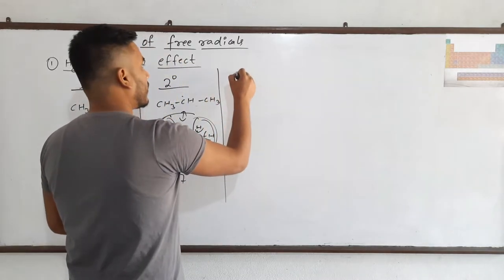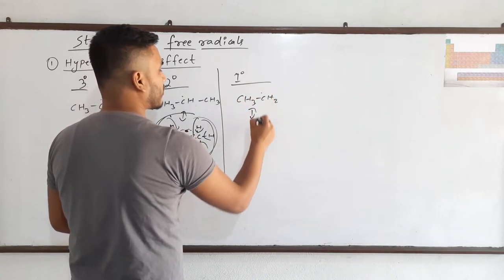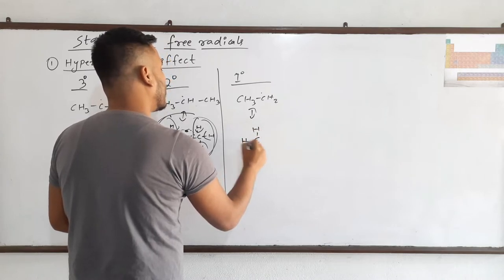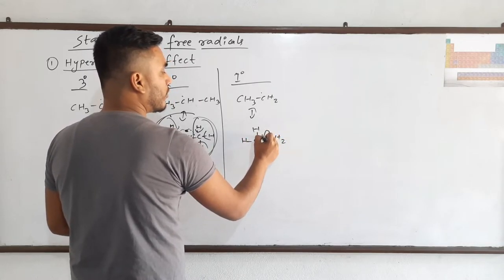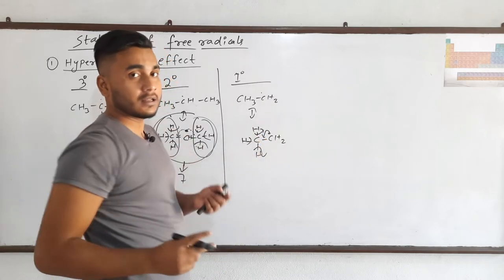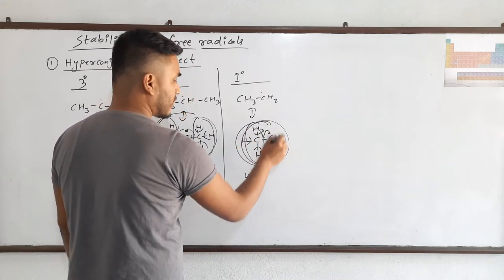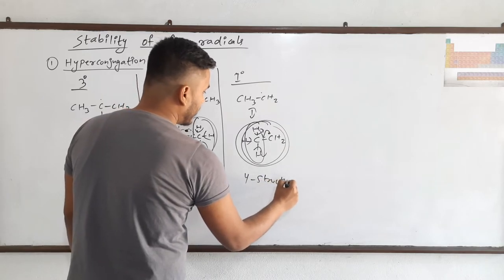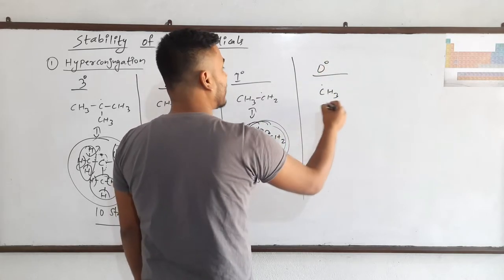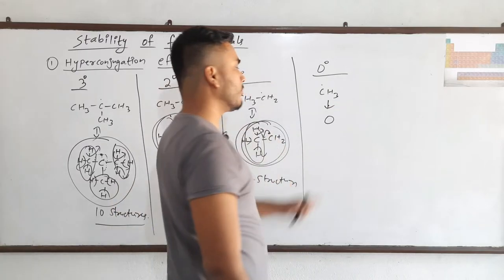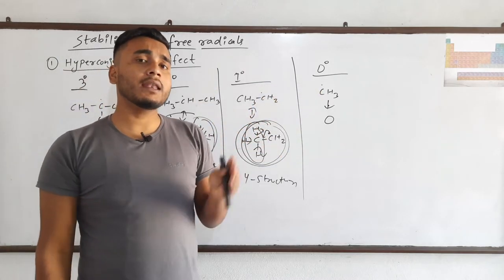For one degree free radical, the expanded structure is CH3-CH2 dot. The electron can come on this bond in 3 possibilities, so it has 4 total structures — 3 plus the pole structure itself. For zero degree free radical, that is CH3 dot, it cannot have any hyperconjugative structure because this electron cannot make a bond with any other carbon, so it will have 0 hyperconjugative structures.